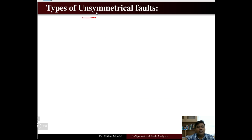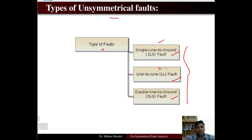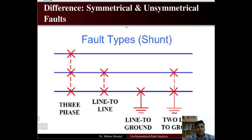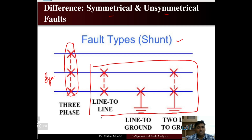The types of unsymmetrical faults are: single line to ground fault, line to line fault, and double line to ground fault. These are the three classifications of unsymmetrical faults. The difference between a symmetrical fault and unsymmetrical fault is that if all three phases are involved, it is a symmetrical fault. These three fault types — single line to ground, line to line, and double line to ground — are unsymmetrical faults.